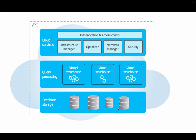The cloud storage can be an S3 bucket, Azure Blob Storage, or Google Cloud Storage. On top of the stored data we have query processing — the virtual warehouse — which is the actual compute power. In cloud terms these are EC2 instances, or virtual machines, that access and fetch data from the database storage layer as instructed by the cloud services layer.